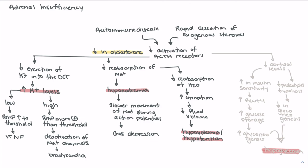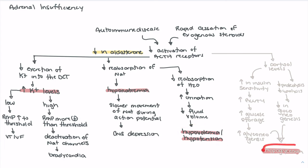In terms of adrenal insufficiency, there are a number of life threats. The patient is at risk of hyperkalemia, which can lead to dysrhythmia. The patient is at risk of hyponatremia, which can lead to osmotic gradient disruptions, fluid shifting, CNS depression, and impairment of action potential. This also leads to less fluid absorption, so the patient urinates more and retains less fluid, putting them at risk of hypovolemia and hypotension. And with decreased gluconeogenesis and increased insulin sensitivity, they're at risk of hypoglycemia.